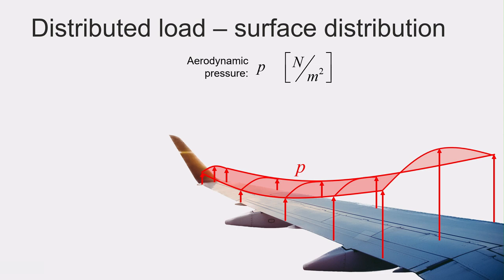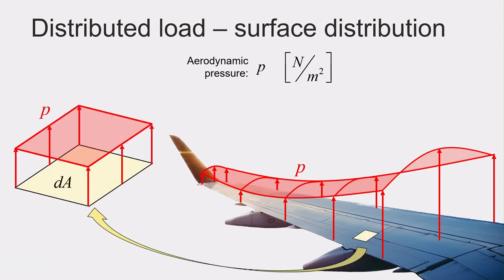If we zoom in on a small patch of that area that we will denote as dA, we see that if the area is small enough that we can consider the pressure p to be constant over that small area, then the resultant force dr acting on it would simply be p times dA. If we wanted to know the resultant force acting over the entire surface, we would need to sum up all of the smaller resultant forces over the surface of the wing, resulting in the integral of p times dA over the entire surface of the wing.